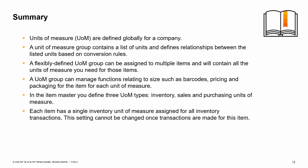Units of measure are defined globally for a company. A unit of measure group contains a list of units of measurement and defines relationships between them based on conversion rules. When you create an item master data record, you assign a unit of measurement group. A flexibly defined unit of measure group can be assigned to multiple items and will contain all the relevant units of measure needed. A UOM group assigned to an item can manage functions such as barcodes, pricing, and packaging for each unit of measure within the group. In the item master data we define three different unit of measure types: inventory, sales, and purchasing. An item may have multiple sales and purchasing units of measure. Each item has a single inventory unit of measure for posting all inventory transactions, and this setting cannot be changed once transactions are made for the item.